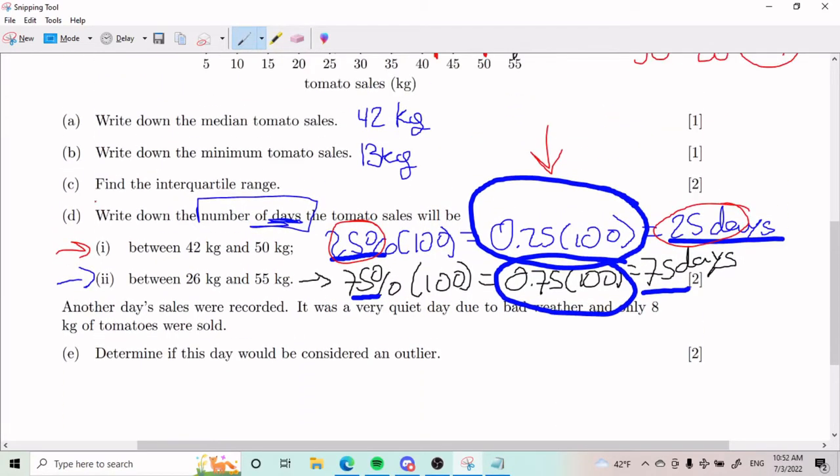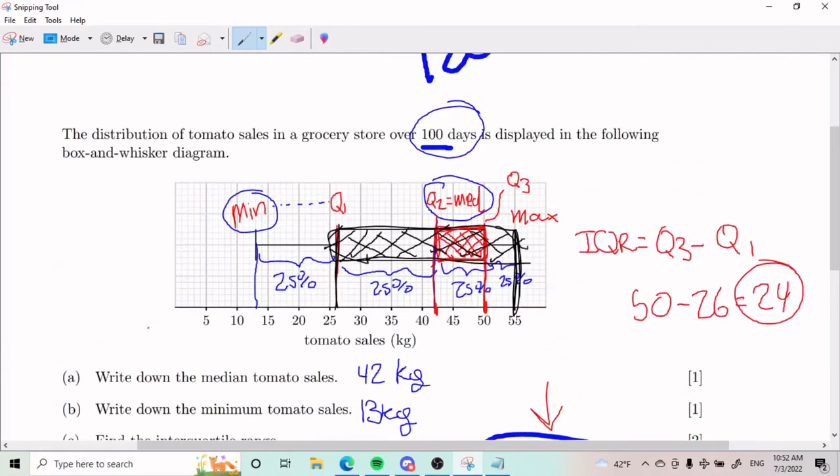Parts A through D is pretty much just knowing how to read a box and whisker plot. Now it gets juicy. Part E: Another day of sales was recorded. It was a very quiet day due to bad weather and only eight kilograms of tomatoes were sold. Determine if this would be considered an outlier. What almost everyone does is they look at eight, see it's around here, below the minimum, and say it's got to be an outlier.